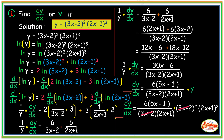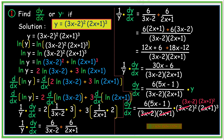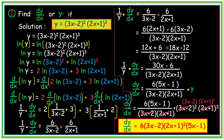Simplifying: (3x-2)² divided by (3x-2) cancels, leaving (3x-2). And (2x+1)³ divided by (2x+1) cancels, leaving (2x+1)². Multiplying the remaining terms, the final answer is dy/dx = 6(3x-2)(2x+1)²(5x-1).